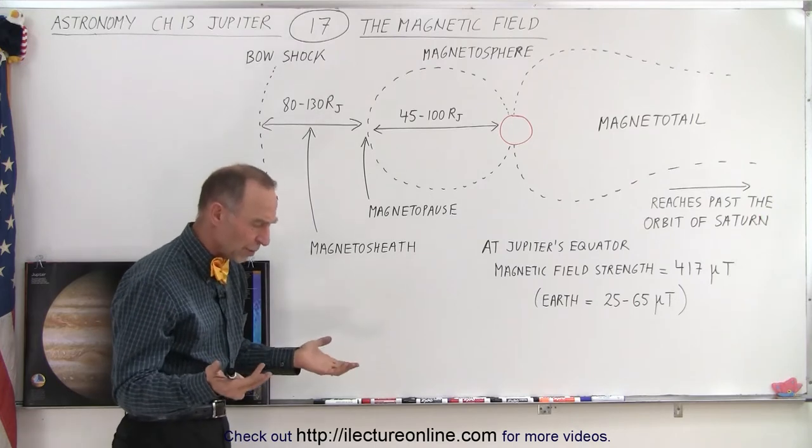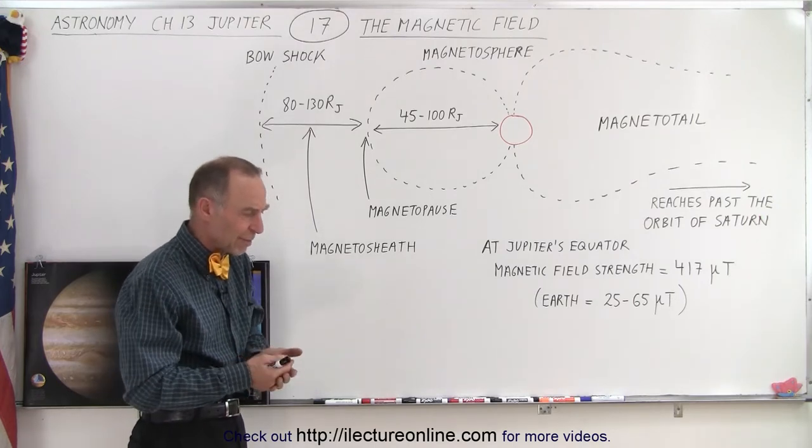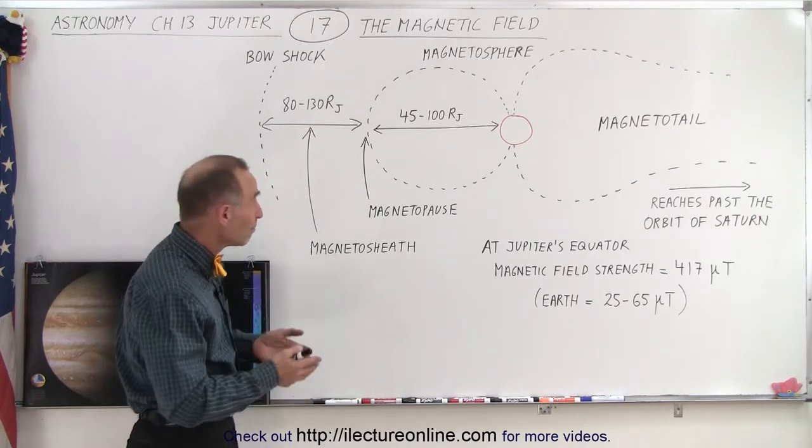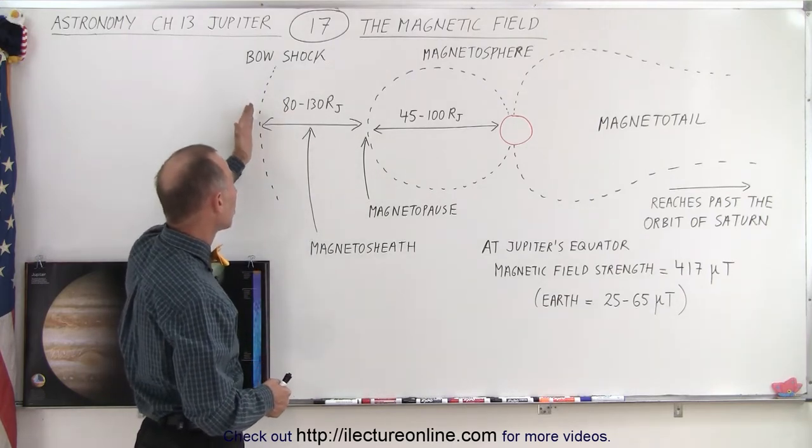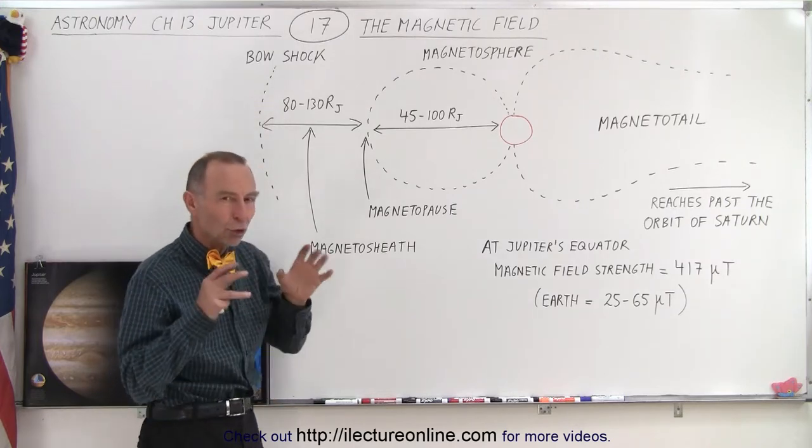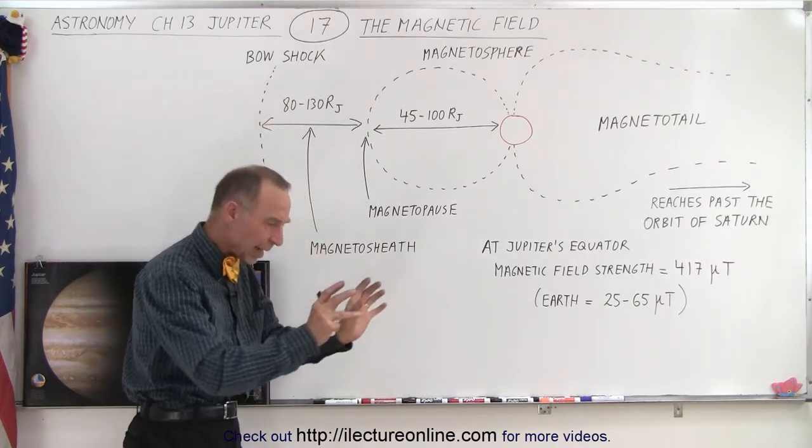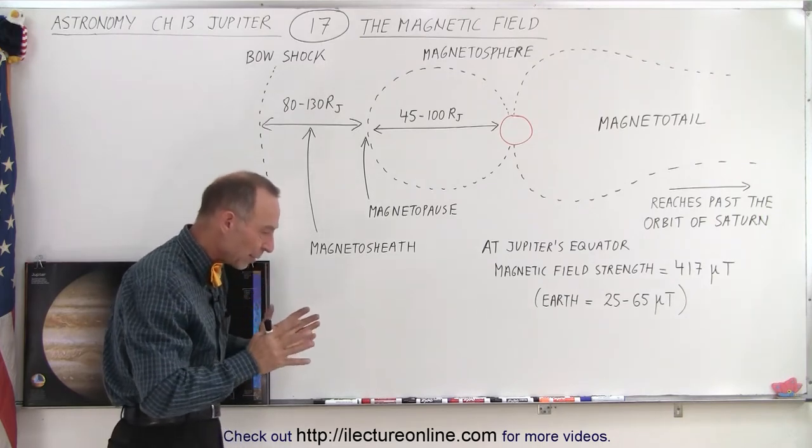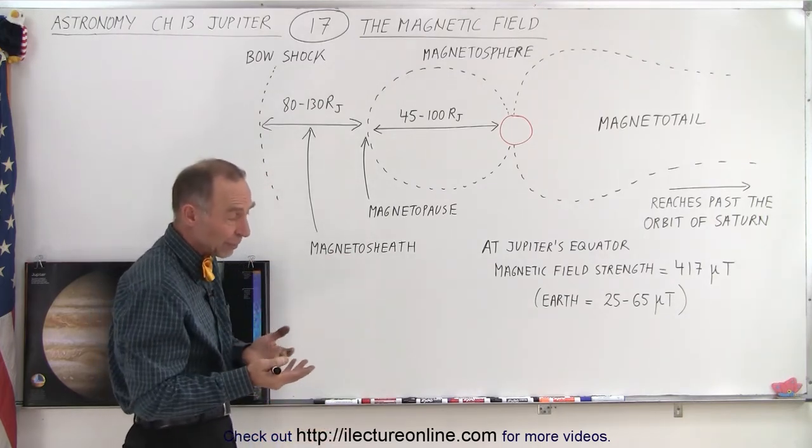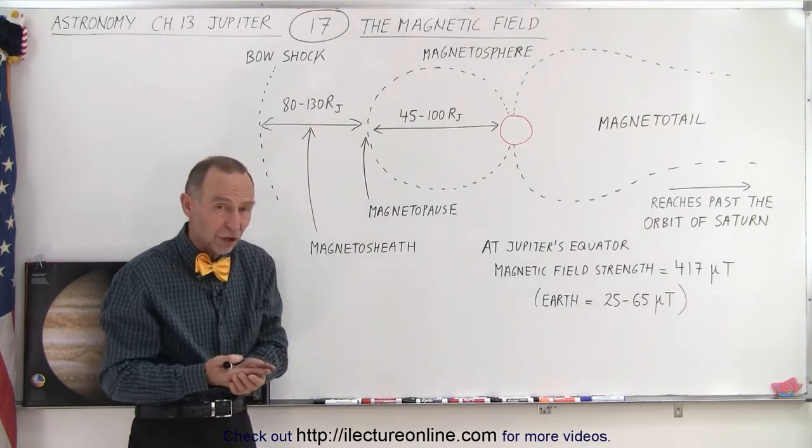That would put it somewhere between maybe four to seven million kilometers in diameter. In front of that we have what we call the bow shock, and this is where the solar wind first encounters the magnetic field effects of Jupiter and the particles begin to part in all directions depending upon whether they're positive or negatively charged.